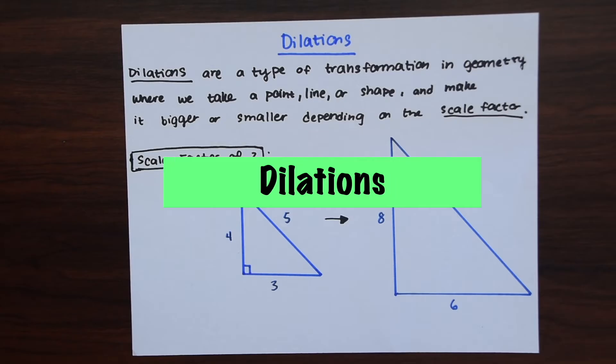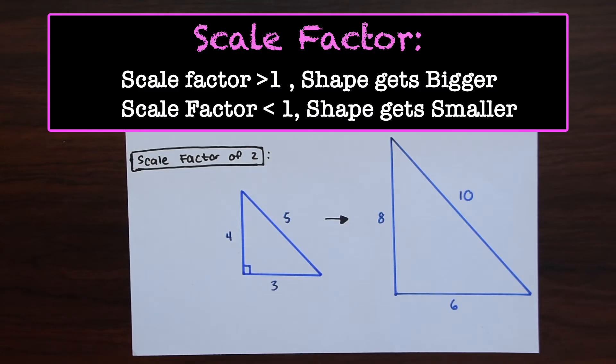So first let's just go over what dilations are. Dilations are a type of transformation in geometry where we take a point, line, or shape and make it bigger or smaller depending on the scale factor. When we're given a scale factor we multiply it times the length or a coordinate point and the shape will either get bigger or smaller.